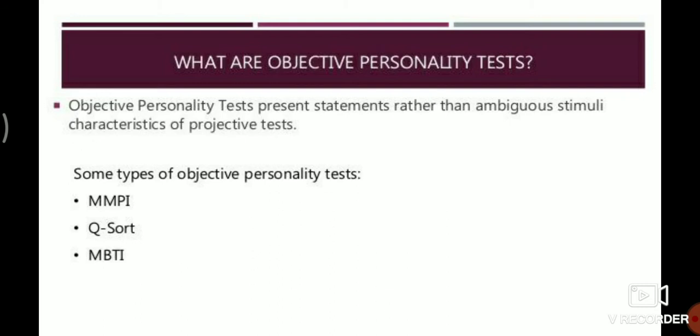Objective personality tests use objective-type questions. For example: 'I enjoy experimenting with new ways of doing things.' The options are: strongly agree, agree, disagree, or strongly disagree.